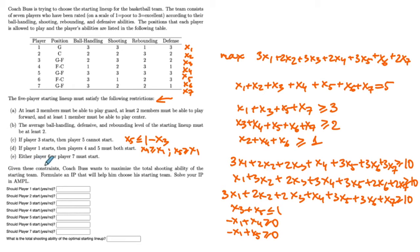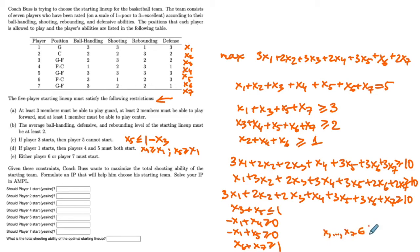Part E: either player 6 or player 7 must start. This means x6 + x7 ≥ 1, ensuring at least one of these two players starts. All variables x1 through x7 are binary. This completes the model.